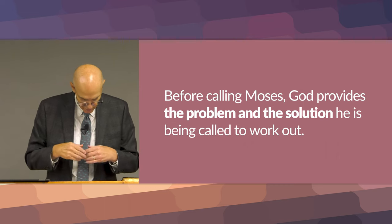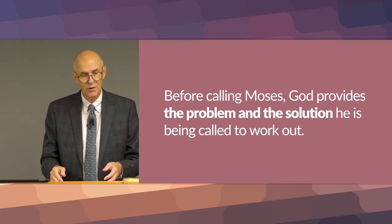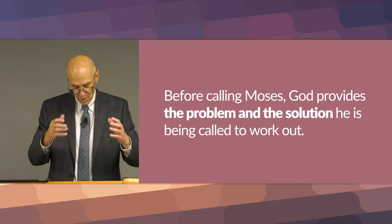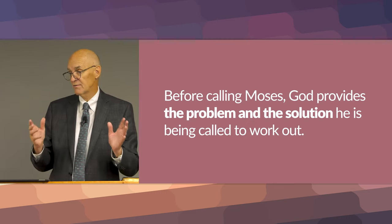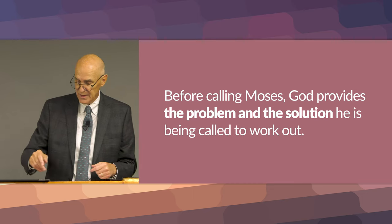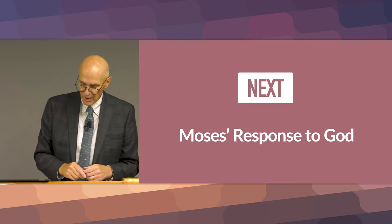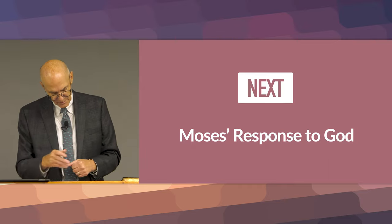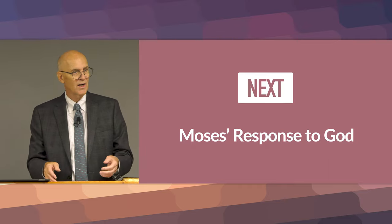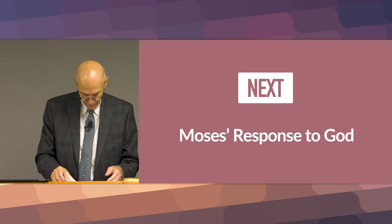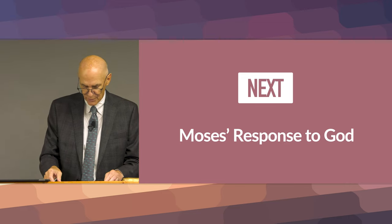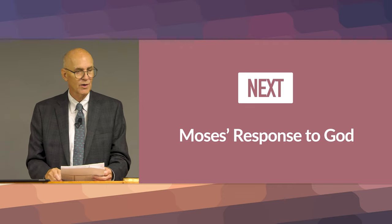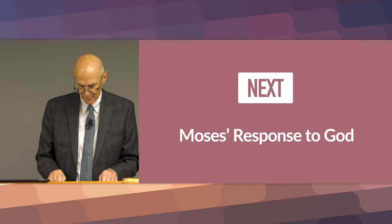God reveals to Moses why he has appeared before actually calling Moses into service. He is aware of both their sufferings and their cry for help. He will deliver them from the power and enslavement of the Egyptians, bring them to a prosperous land that he will give to them, and specifies exactly what land this will be by naming its current occupants. He repeats that he has heard the prayers of his people concerning their suffering. Before calling and sending Moses to fulfill his commission, God identifies both the problem — the suffering of the Israelites — and the solution: bringing them to their own prosperous and presently occupied land.